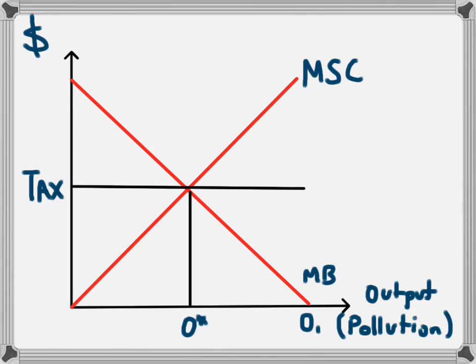Therefore, the best position for the business is the O* level, which is also the best level for society. The business would not have produced that amount of output on its own — it would have produced all the way up to O1 to maximise profits. The total benefit to the business producing at O1 would be A plus B plus C plus D. However, by implementing the tax, the benefit to the business is now just A, and the tax received by the government is B plus C.